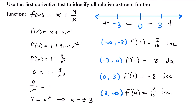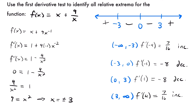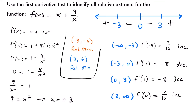Now let's find the y components by plugging the critical values into the original function. Our first point, negative 3, gives a y value of negative 6 — so negative 3, negative 6 is our relative max. And plugging in 3 gives a y value of positive 6 — so 3, positive 6 is our relative minimum.